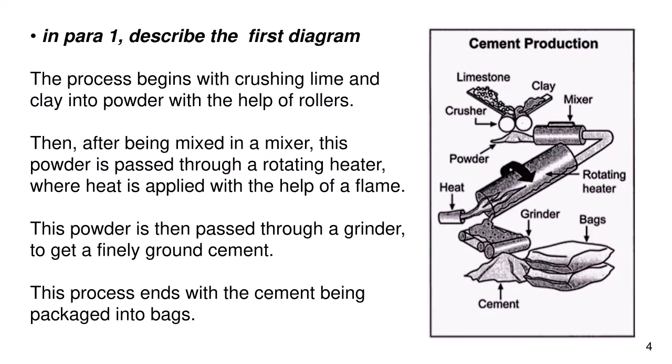In part 1, describe the first diagram. The process begins with crushing lime and clay into powder with the help of rollers. Then, after being mixed in a mixer, this powder is passed through a rotating heater, where heat is applied with the help of a flame. This powder is then passed through a grinder to get a finely ground cement. This process ends with the cement being packed into bags.